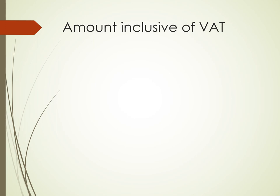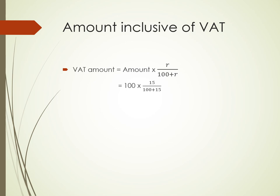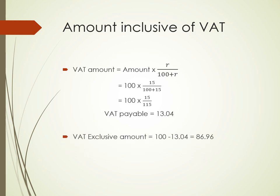In scenario two, the amount is inclusive of VAT, meaning this is the final amount the customer will pay. To calculate the VAT amount, we use the VAT fraction formula: amount times R divided by 100 plus R. With R at 15%, we calculate 100 times 15 divided by 115, which gives us a VAT amount of $13.04. To calculate the exclusive amount, we take $100 minus $13.04 VAT, giving us a VAT exclusive amount of $86.96.